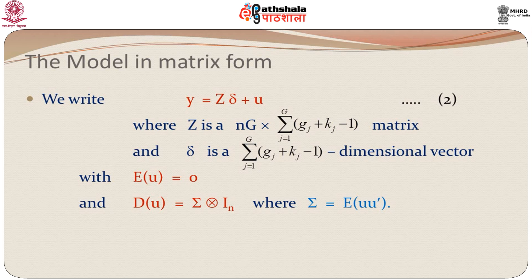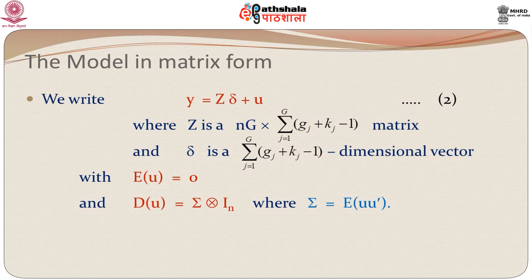The expectation of u is zero, since the expectation of the individual u's is zero. The dispersion of u becomes sigma Kronecker product I_n, because we have n independent observations and each time the set of u_1 through u_j has the same covariance matrix sigma.